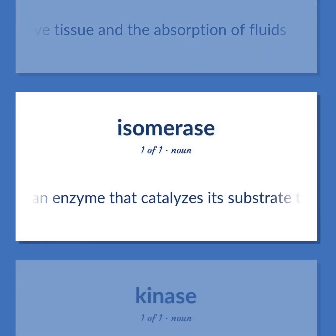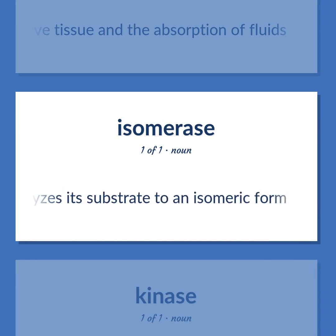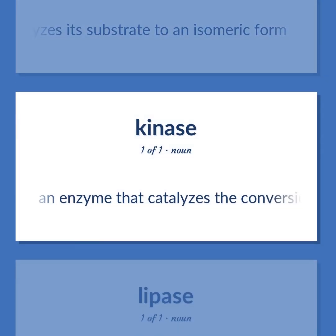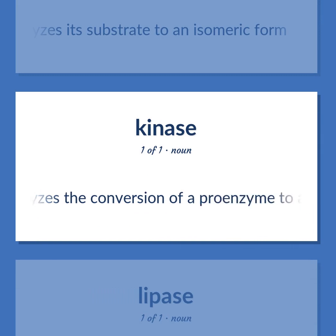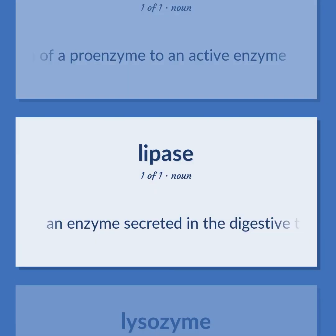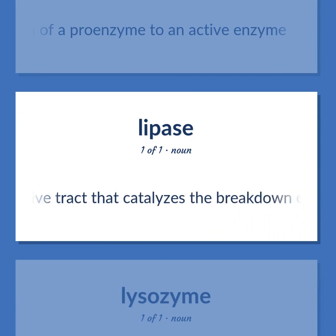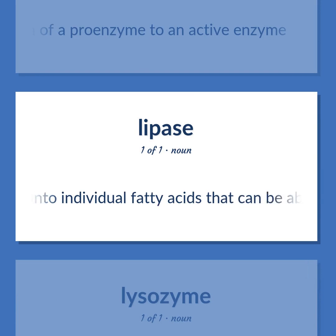An enzyme that catalyzes its substrate to an isomeric form. An enzyme that catalyzes the conversion of a proenzyme to an active enzyme. An enzyme secreted in the digestive tract that catalyzes the breakdown of fats into individual fatty acids that can be absorbed into the bloodstream.